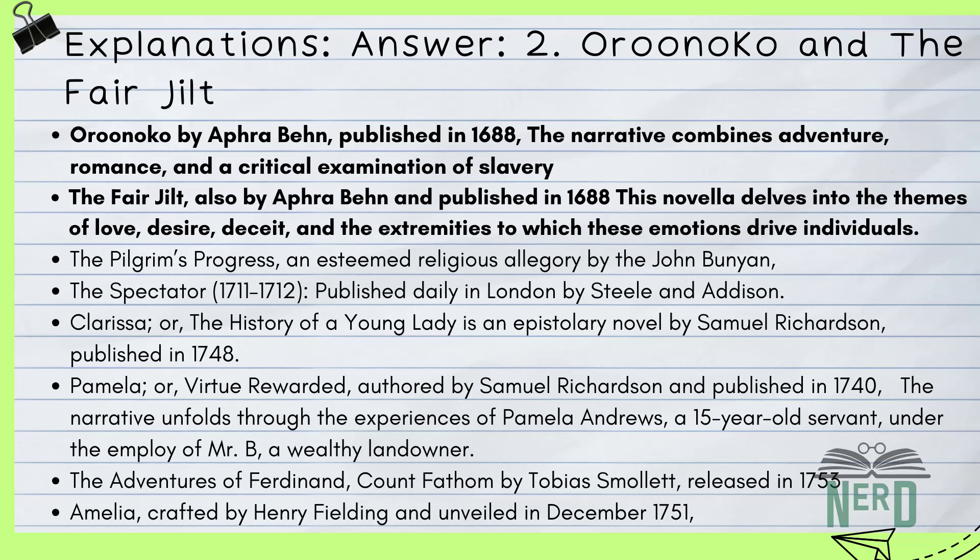Think of them as the early birds in the English lit scene. Oroonoko by Aphra Behn, which hit the shelves in 1688, is this epic tale that mixes adventure, romance, and deep thoughts about morality and the early fight against slavery. Behn was ahead of her time, drawing from her own travels to Suriname. The story centers on Oroonoko, an African prince who ends up enslaved — heavy on criticizing the hypocrisy of civilized folks and the dark sides of slavery. It's like a preview of novel writing with its mix of storytelling and social commentary.